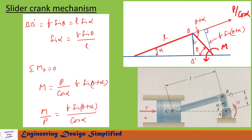On this piston there is a force P applied in the horizontal direction. The component of this force along the coupler will become P/cosα, since this angle is alpha. So this force P/cosα will act along the coupler. Now let us draw a line from point A perpendicular to this force arrow.